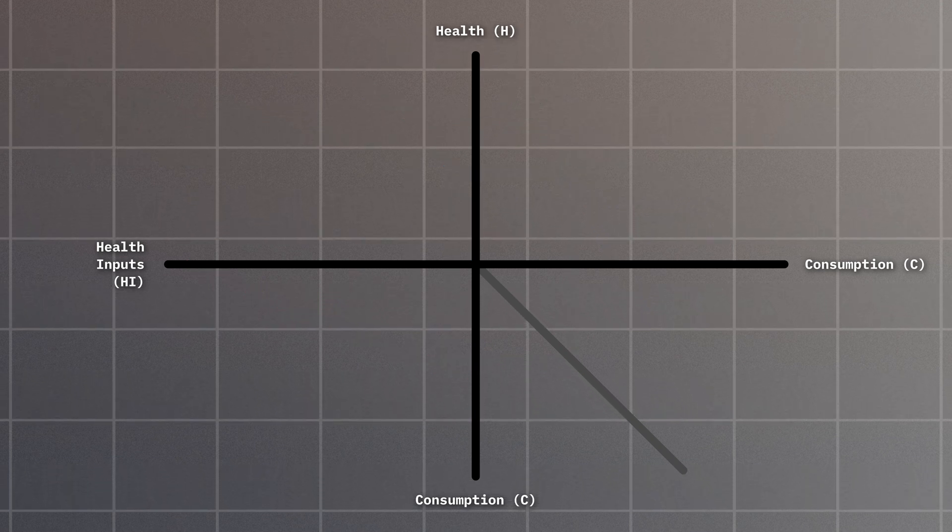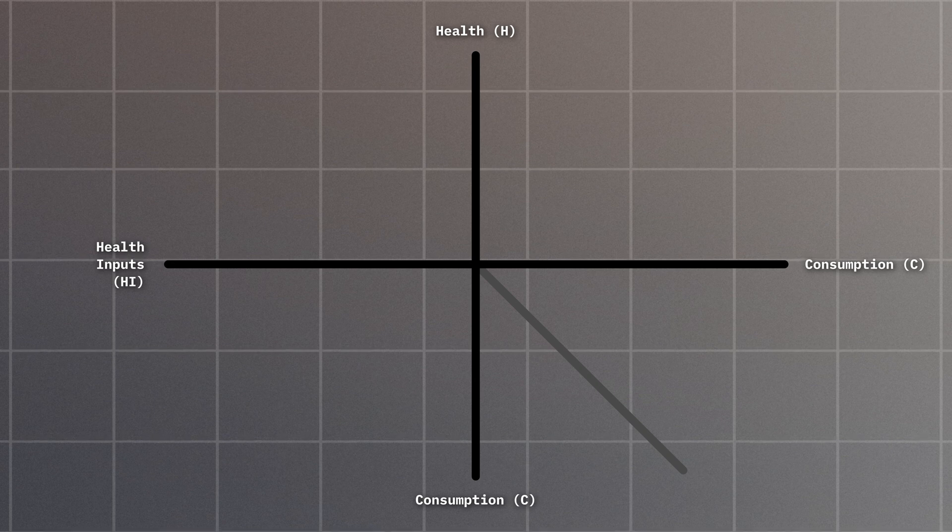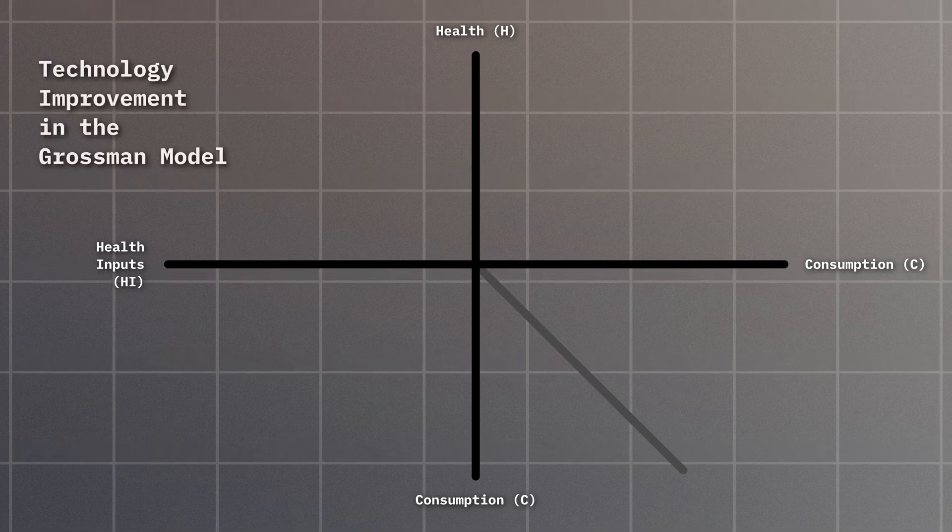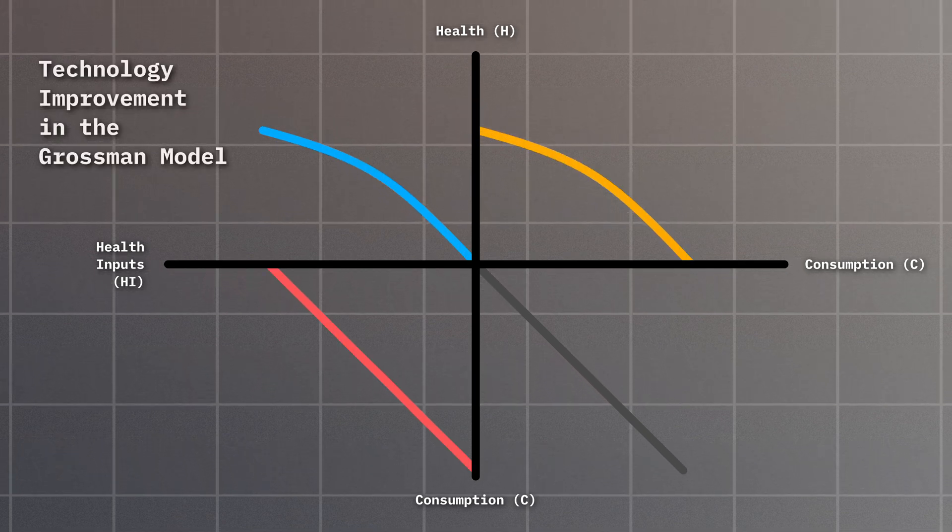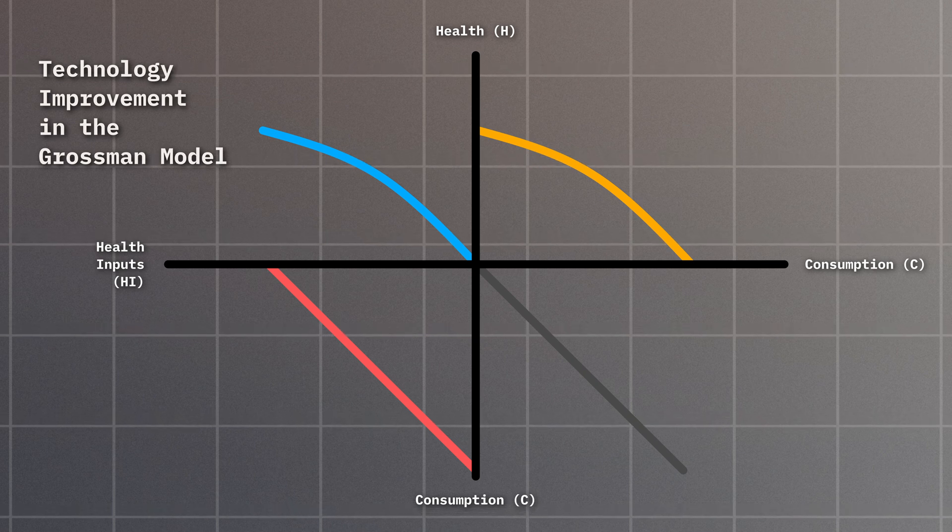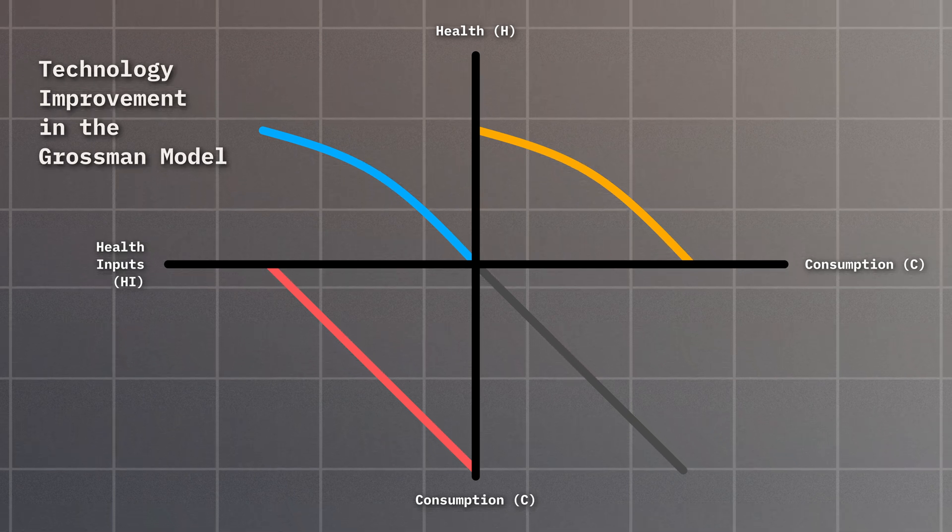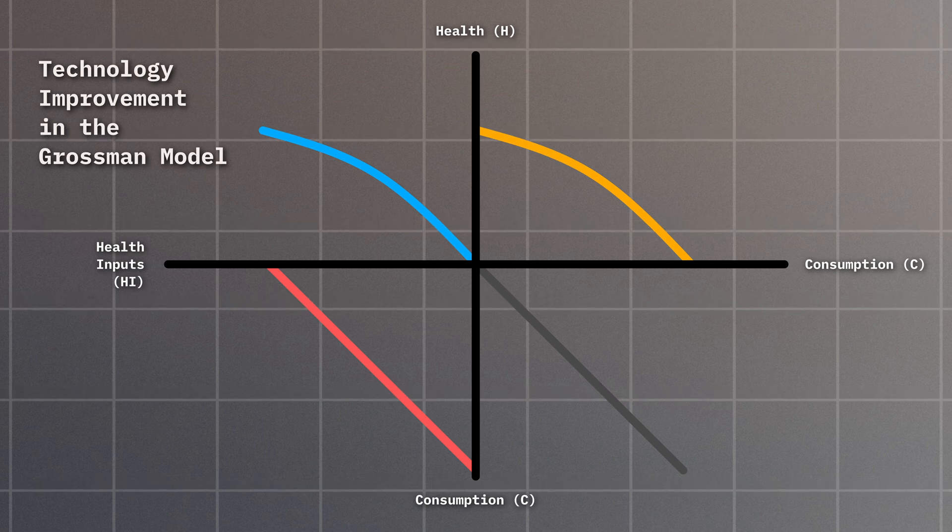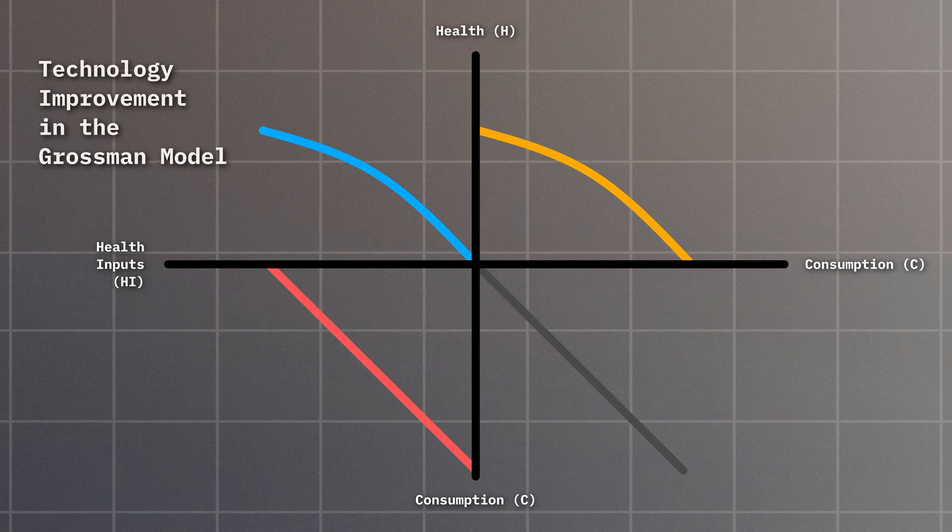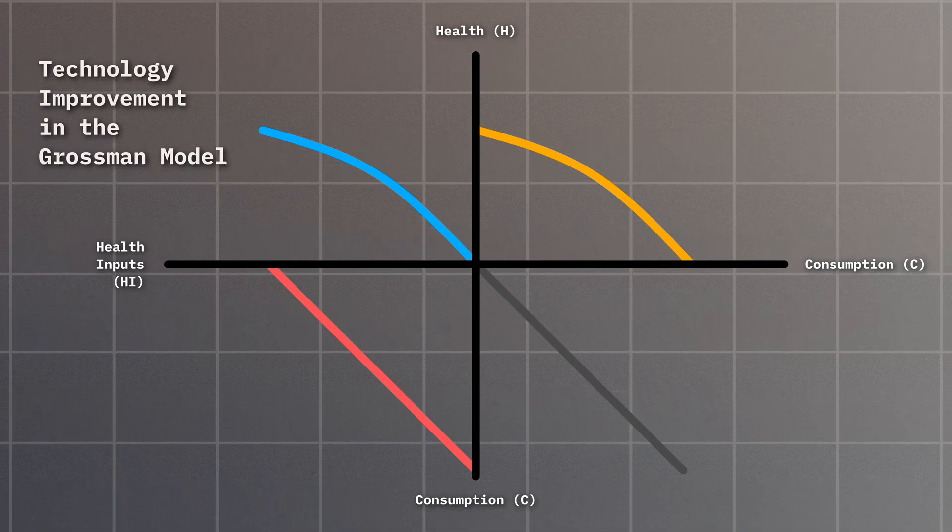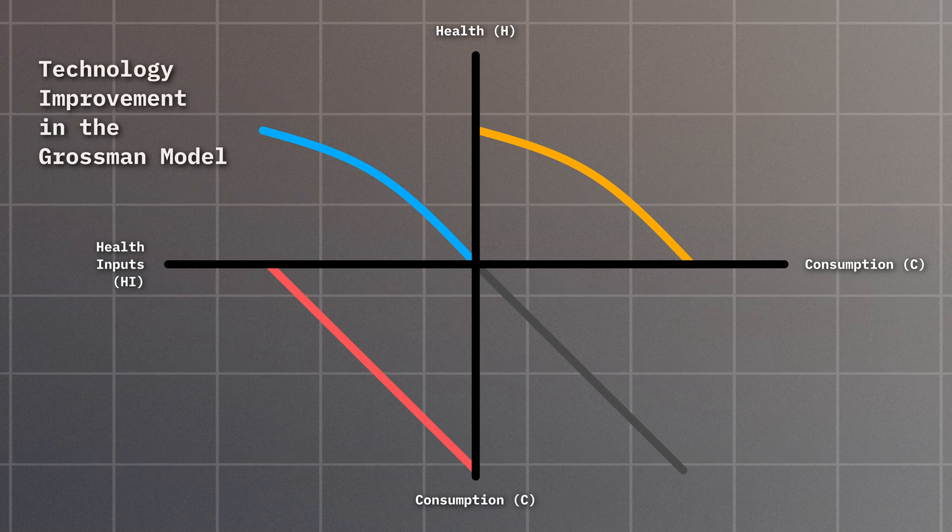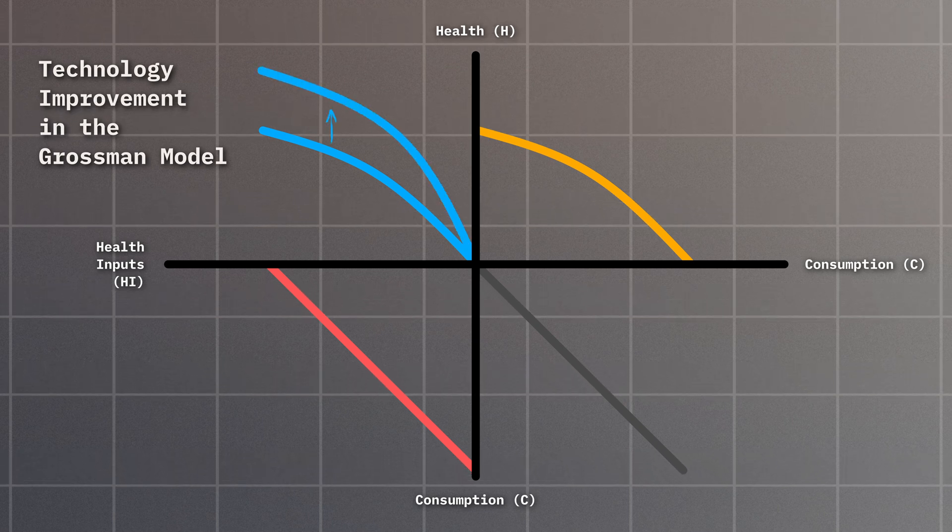You may also come up with a scenario in which the technology we use to produce health suddenly gets better, allowing us to produce more health with fewer health inputs. We can think of AI as a great example for this, speculating that it changes our production function in Quadrant 2. If we assume that AI makes the production of health more efficient while keeping the price for one unit of health input the same, our production curve will move up.